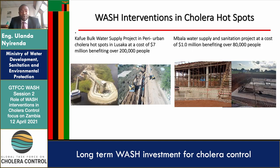We also have the Kafue bulk water supply project. The component directly impacting those in hotspots is seven million US dollars and will benefit over 200,000 people. On the left we have infrastructure being constructed — an old water intake and a new one — and pipes being laid to bring water 65 kilometers into Lusaka to improve the water supply.